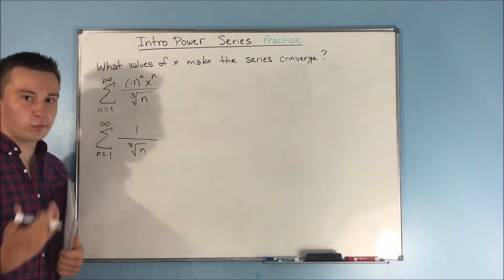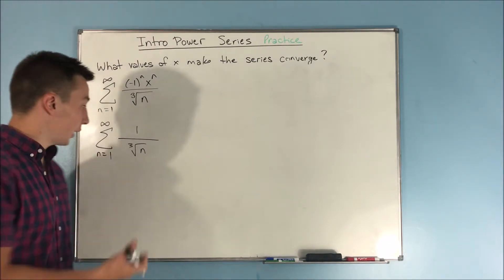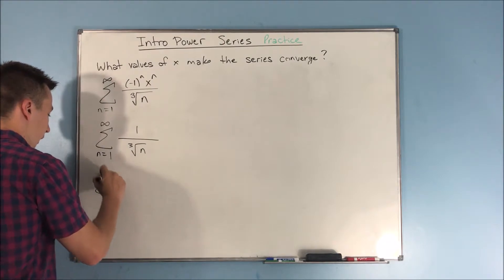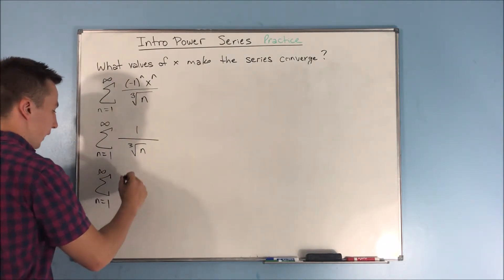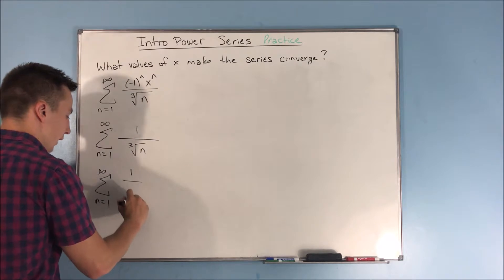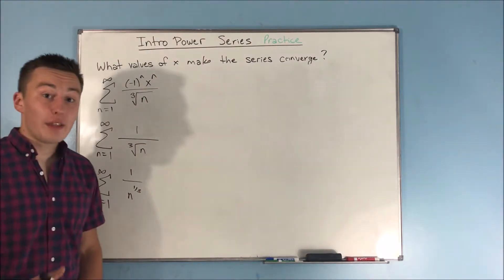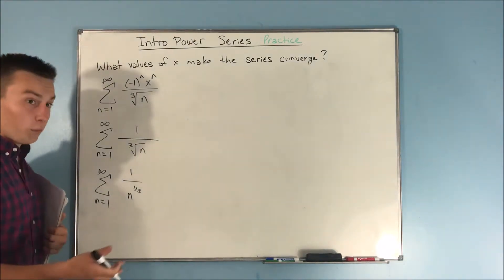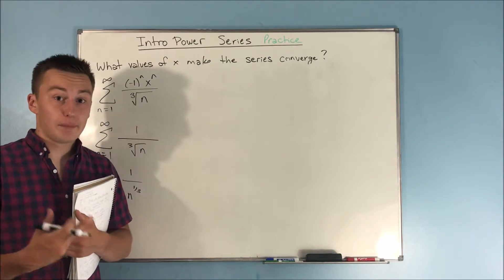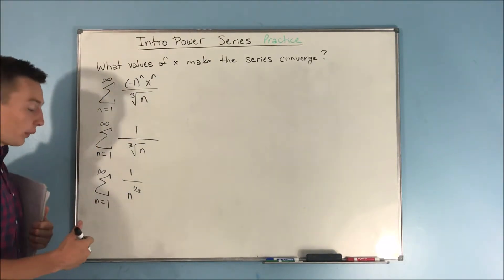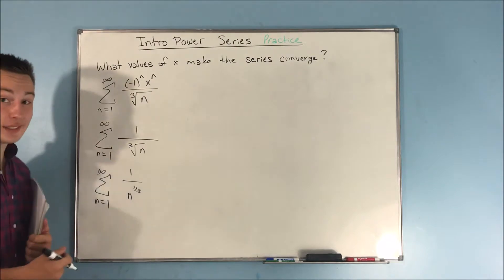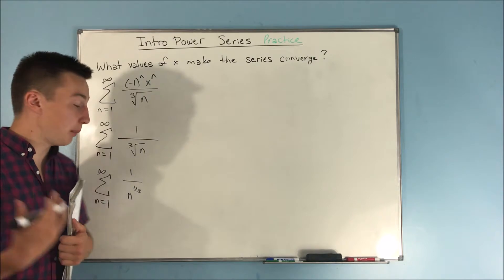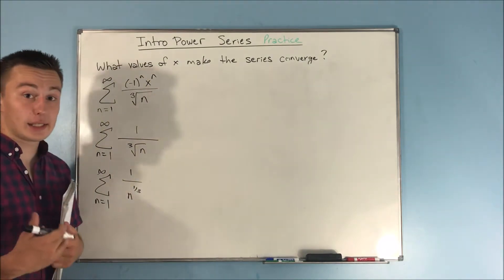We now have a p-series. Rewriting as the sum from n equals 1 to infinity of 1 over n to the one-third, we see p equals one-third, which is less than 1. That means this is a divergent p-series, since p is less than or equal to 1.